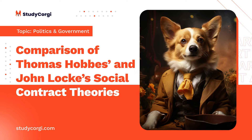Still, both their theories do not comply with the complicated modern reality. Thomas Hobbes and John Locke's social contract theories are significantly different; operating with similar terminology, they present contrasting views on human nature, ideal government, and its functions, and have various limitations describing current political society in the USA.